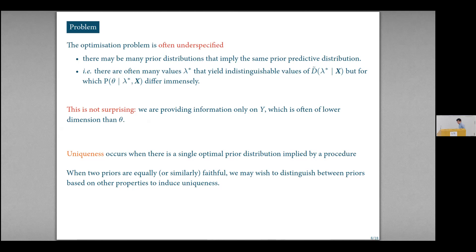Unfortunately, it's not so simple as that because this optimization problem is often under-specified. There's often more than one choice of lambda that implies exactly the same prior predictive distribution, or that are indistinguishable. This is not really that surprising, right? Because especially if you've got a univariate y, then the dimension of your parameter space theta is often larger than one. And so you're providing information only on a lower dimensional quantity. And so it's not surprising that there will often be a non-uniqueness here, but you might like uniqueness. That's the second property after faithfulness that we might like to have if we could.